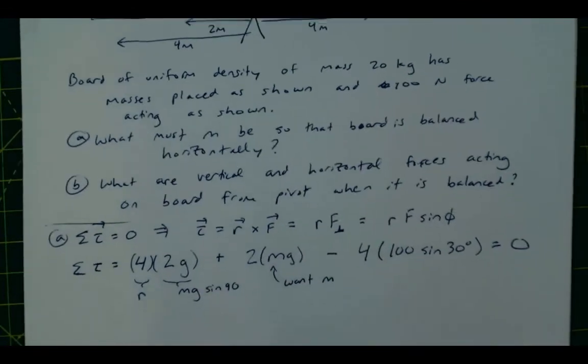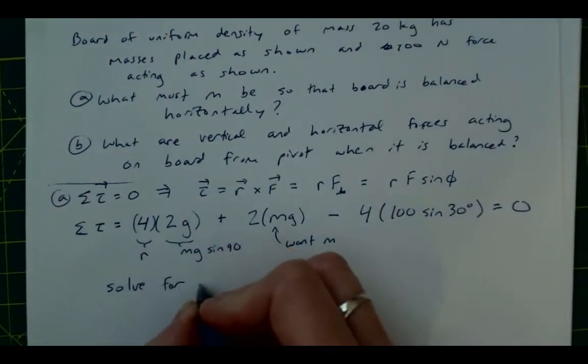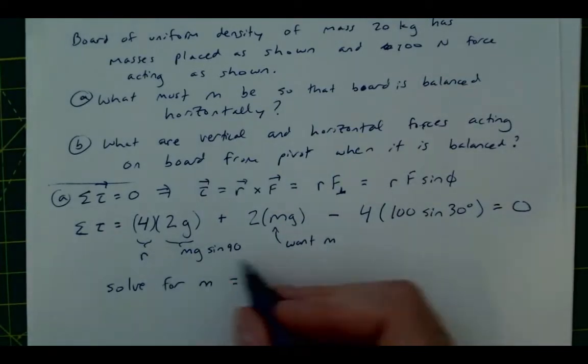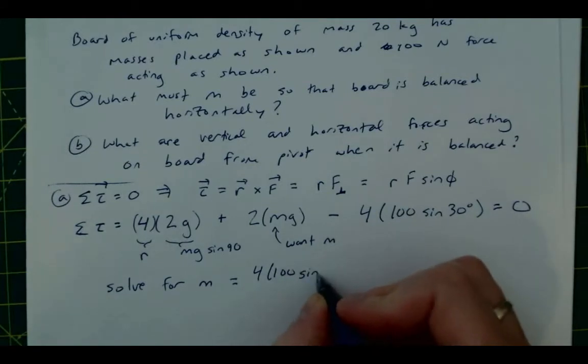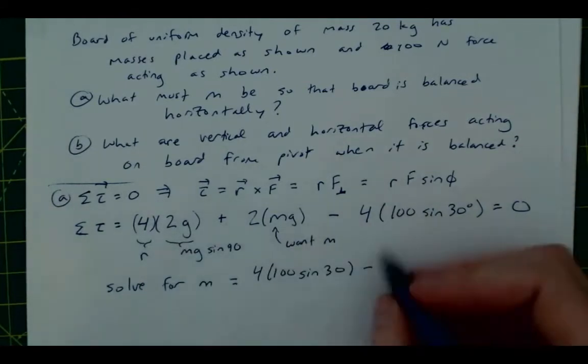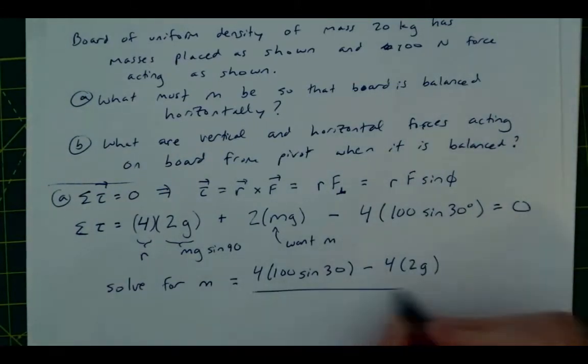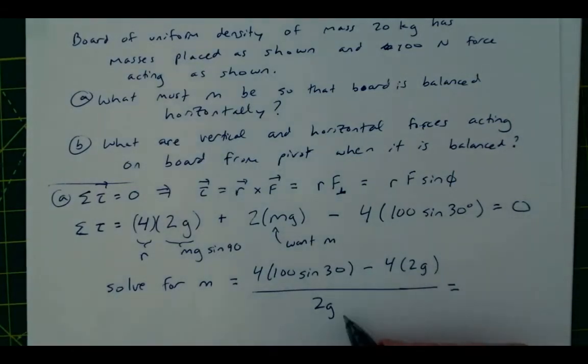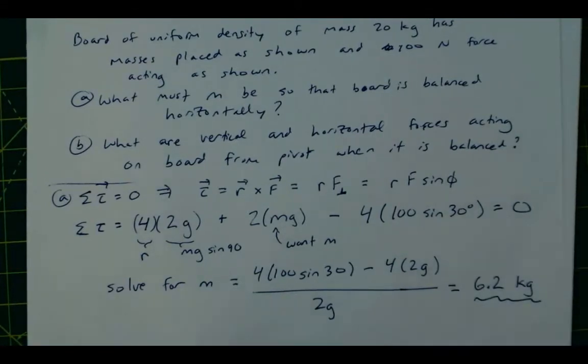And then that's going to be equal to 0. So I can now solve for M. And so M is going to be equal to 4 times 100 times the sine of 30 minus 4 times 2G over 2 times G. And then when I plug in for G equaling 9.8 and solve this, you end up with 6.2 kilograms. So then that's our answer for part A.